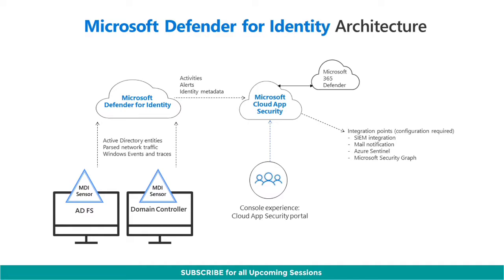Utilizing profiling, deterministic detection, machine learning, and behavioral algorithms, Defender for Identity learns about your network, enables detection of anomalies, and warns you of suspicious activities. Installed directly on your domain controller or ADFS servers, the Defender for Identity sensor accesses the event logs it requires directly from the servers. After the logs and network traffic are parsed by the sensor, Defender for Identity sends only the parsed information to the Defender for Identity cloud service — only a percentage of the logs are sent.